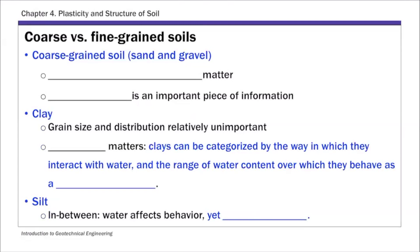To understand why we define these Atterberg limits, let's look at what we have learned so far. For coarse-grained soils — sands and gravels — grain size and grain size distribution matter. Their engineering properties are dictated by the grain sizes and the distribution of different grain sizes, as well as relative density, something we covered in the previous lecture. Relative density gives us a pretty good indication of the proper engineering behavior.